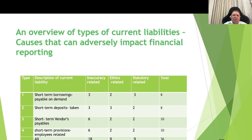In the first row, short-term borrowings: three inaccuracy-related, two ethics-related, and three strategy-related aspects, totaling eight. Short-term deposits taken: three inaccuracy-related, three ethics-related, and two strategy-related, totaling eight. Short-term vendors payable: six inaccuracy-related, two ethics-related, two strategy-related, totaling ten. Short-term employee provisions: six inaccuracy-related, two ethics-related, two strategy-related — totaling 36 overall causes.